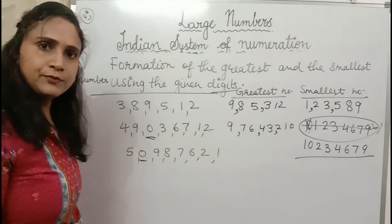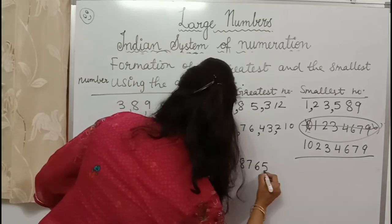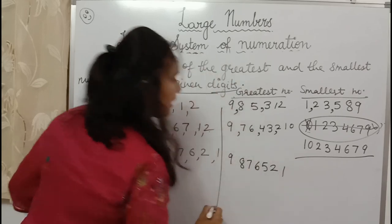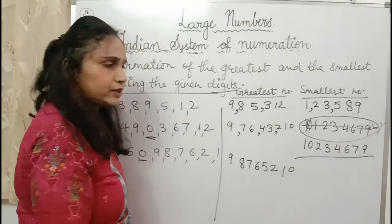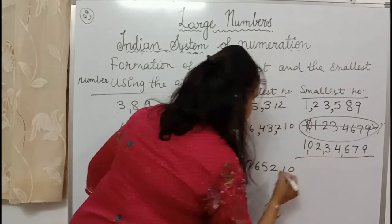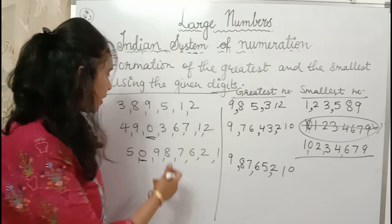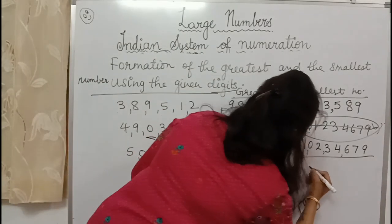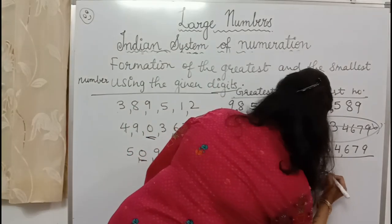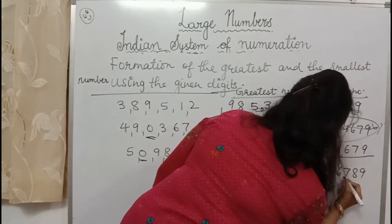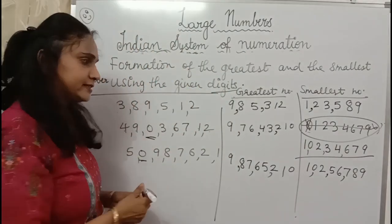See this number also has 0. For the greatest: 9, 8, 7, 6, 5, 2, 1 — mark the periods. For the smallest: 1, 0 comes at the second place, then 2, 5, 6, 7, 8, 9 — so 1, 0, 2, 5, 6, 7, 8, 9 — mark the periods. This is the smallest number formed by these digits.